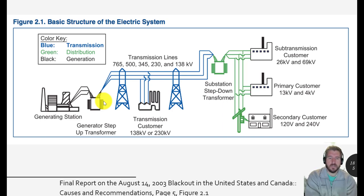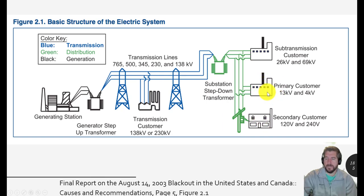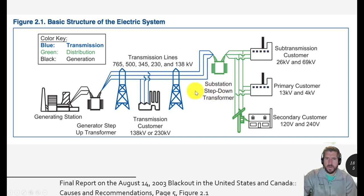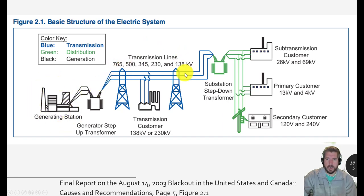Before we talk about intermittency, let's look at how the electricity system is structured. We have customers — a residential house or small business — on the distribution grid, which connects to a substation near your neighborhood. That substation converts electricity from the high-voltage blue transmission lines to lower voltage that goes into your home. We also have transmission lines, which carry much higher voltages and can go longer distances. Large industrial factories can hook directly into this system, and then we usually have the generation station at the other end.